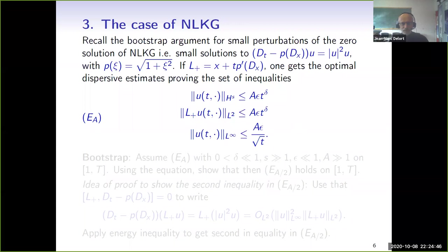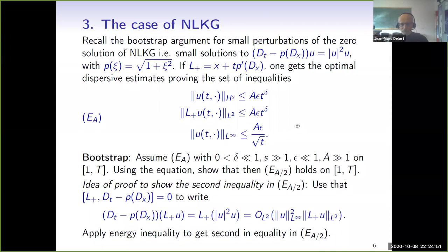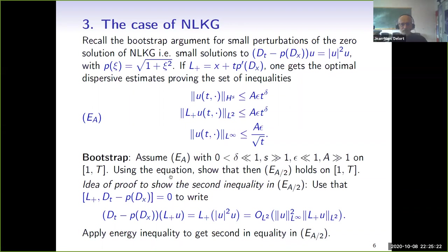To prove such an estimate, you must simultaneously prove two other estimates that together propagate up to infinity. First, a Sobolev estimate saying the Sobolev norm of U is O(epsilon t^delta) for small positive delta and s large enough. Second, an L^2 estimate: if you act on U with the operator L_+, defined as x plus t P'(dx), then the L^2 norm of L_+ U is also bounded by epsilon t^delta for small delta. These estimates are run through a bootstrap argument: assume the set E_A of estimates with constant A holds on some interval [1, T], and show that if delta, 1/s, epsilon are small enough and A is large enough, then E_{A/2} still holds on the same interval.